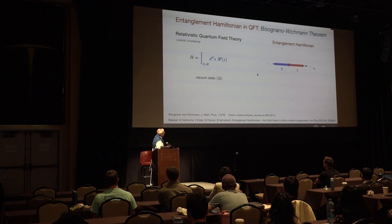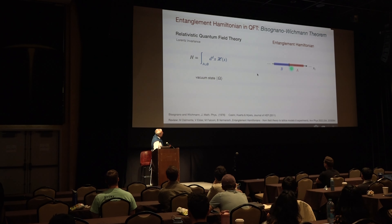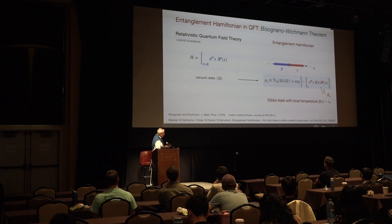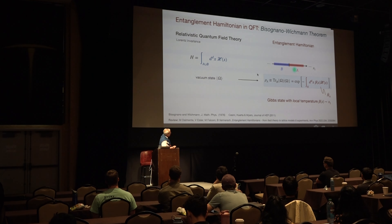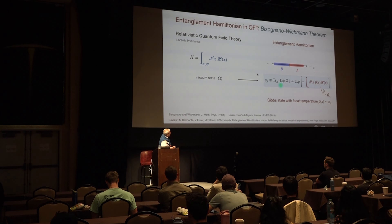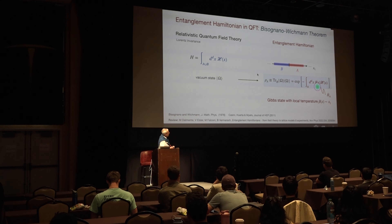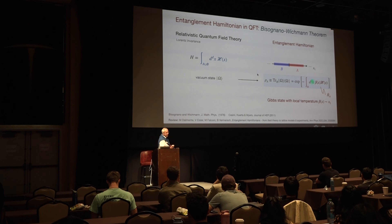Illustrated simply: if I take a 1D system — it is valid in higher dimensions — and bipartition it into A and B, the statement is a remarkably simple one. Namely, the trace over system B gives us the reduced density operator from this part, of the vacuum state or ground state of my system. It is simply an exponential and has the form of a Gibbs ensemble, where if this beta — the inverse temperature — was a constant, you could pull it out of the integral and this would simply be the Gibbs ensemble for a given temperature beta.